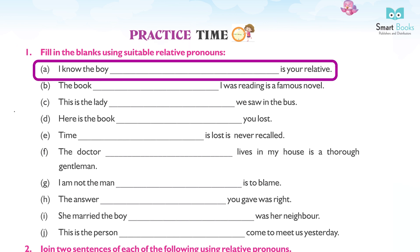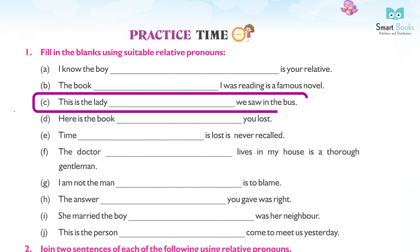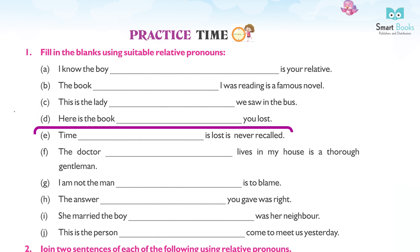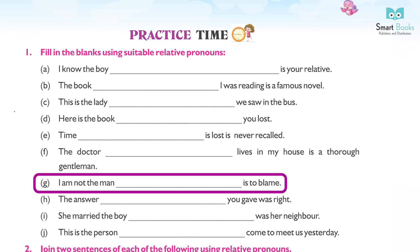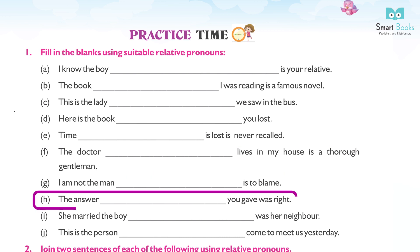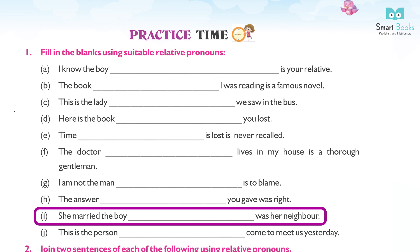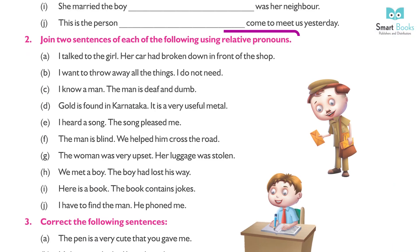Answers: (a) I know the boy who is your relative. (b) The book that I was reading is a famous novel. (c) This is the lady whom we saw in the bus. (d) Here is the book which you lost. (e) Time that is lost is never recalled. (f) The doctor who lives in my house is a thorough gentleman. (g) I am not the man who is to be blamed. (h) The answer which you gave was right.